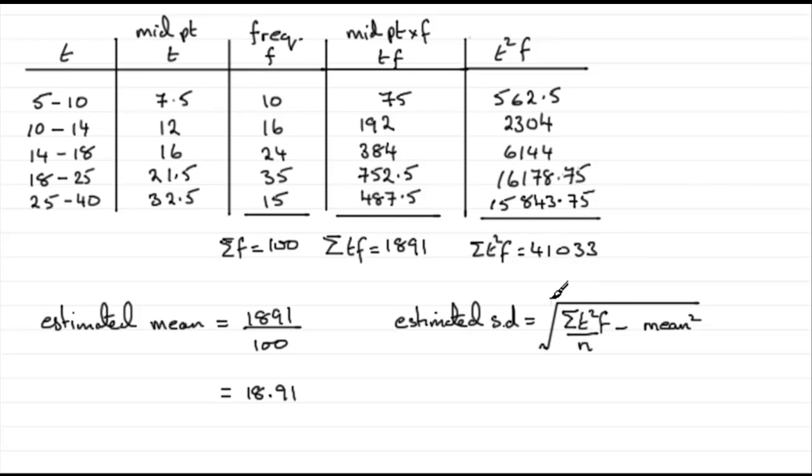So all we need to do is substitute these values into the formula to get our estimated standard deviation. So what we've got is equal to the square root then of t squared f, 41033 divided by n which we know is 100, minus our estimated mean over here squared, so 18.91 squared. Work that out in your calculator and you should find you get 7.2623 and so on.